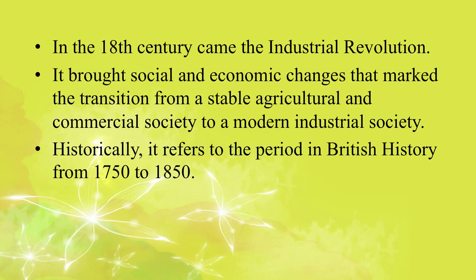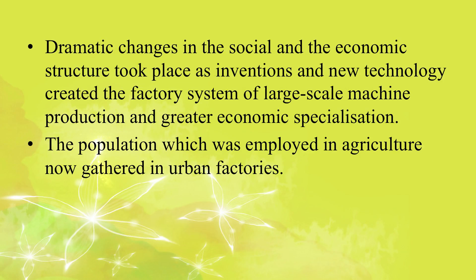In the 18th century came the Industrial Revolution. It brought social and economic changes that marked the transition from a stable agricultural and commercial society to a modern industrial society. Historically, it refers to the period in British history from 1750 to 1850. Dramatic changes in the social and economic structure took place as inventions and new technology created the factory system of large-scale machine production and greater economic specialization.